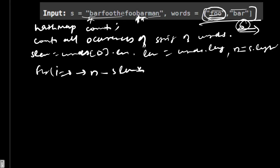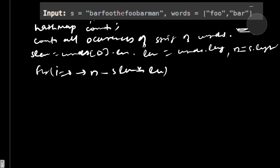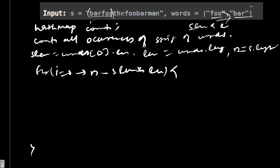So the loop runs from i=0 to n minus sLen times len plus one. Inside the loop, we declare another hash map called 'seen' and extract the substring from i to i plus sLen times len to check against our word counts.